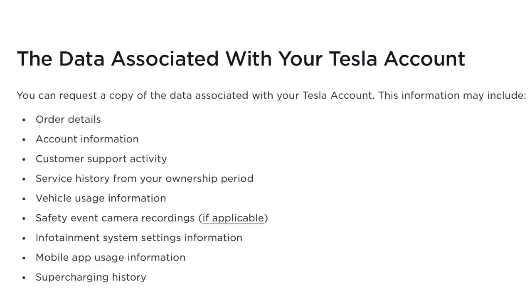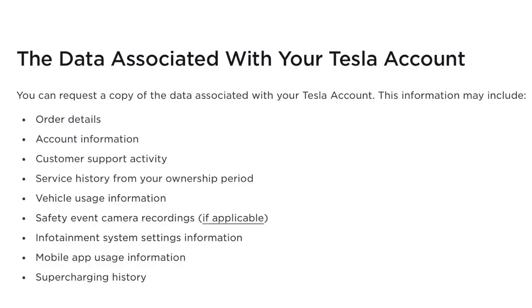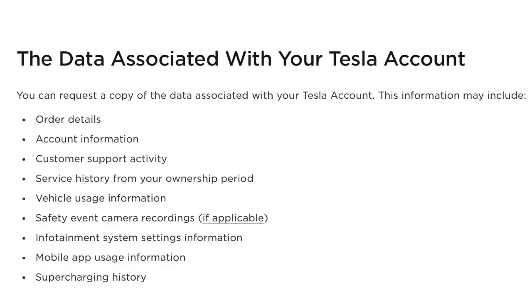Vehicle usage information — I opened up those spreadsheets and was very confused by the data. I'm not really sure what I was looking for. If anyone has experience looking at vehicle usage data, please leave a comment. Safety event camera recordings, if applicable — Lucky doesn't have sentry mode, so not applicable to us. Infotainment system settings information — didn't get that either; not sure why.